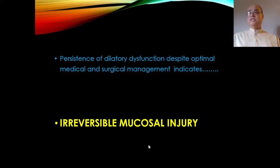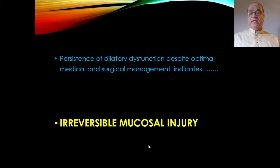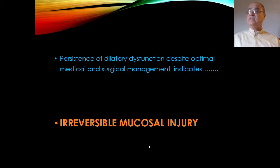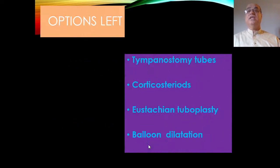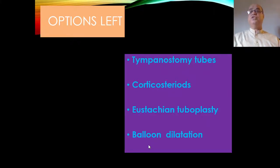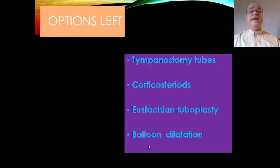Persistence of dilatory dysfunction despite optimal medical and surgical management of underlying diseases indicates that irreversible mucosal injury has occurred. In this situation, the options are: use of corticosteroids, tympanostomy tube insertion (grommet) in the tympanic membrane to bypass the Eustachian tube and ventilate the middle ear from the external ear, Eustachian tube tuboplasty, or balloon dilatation.